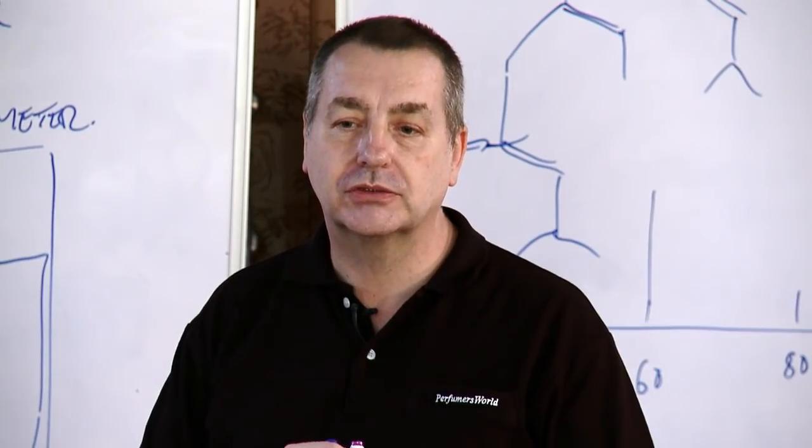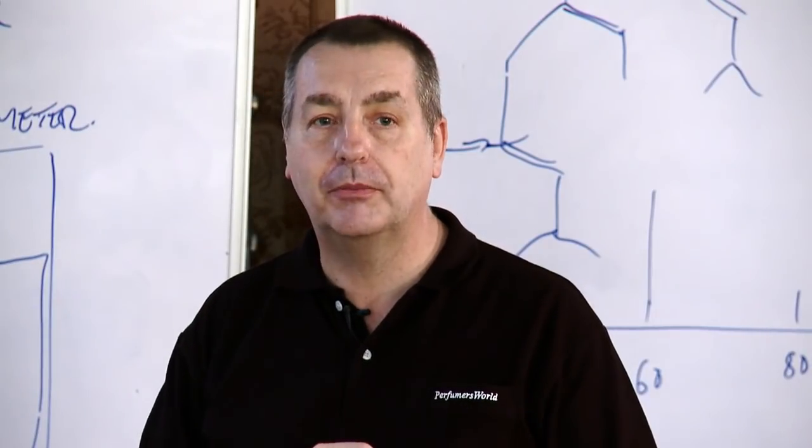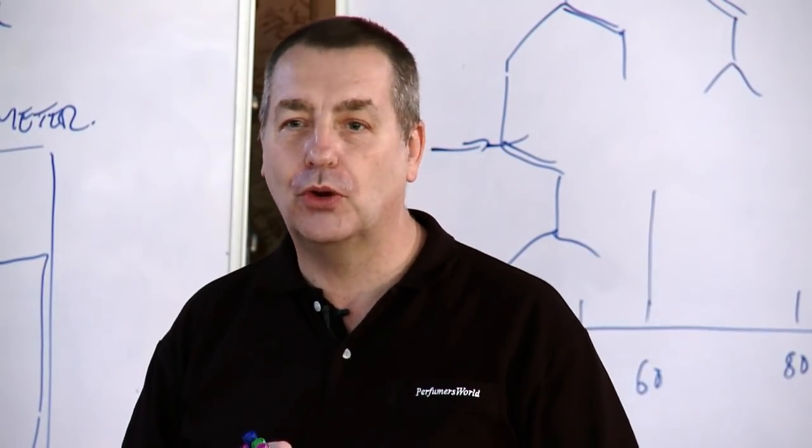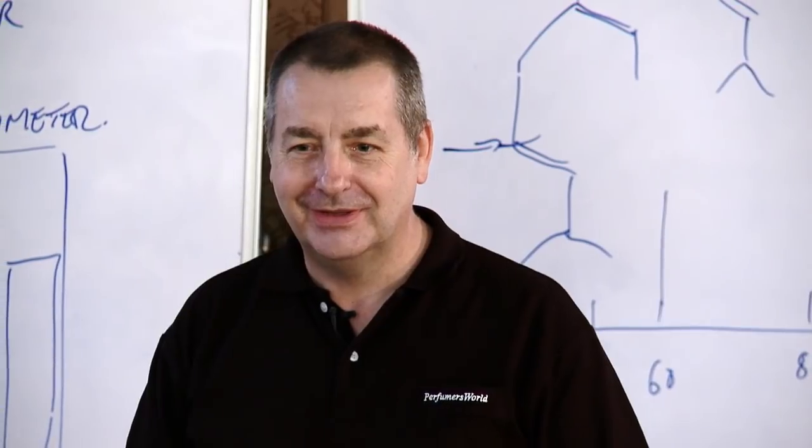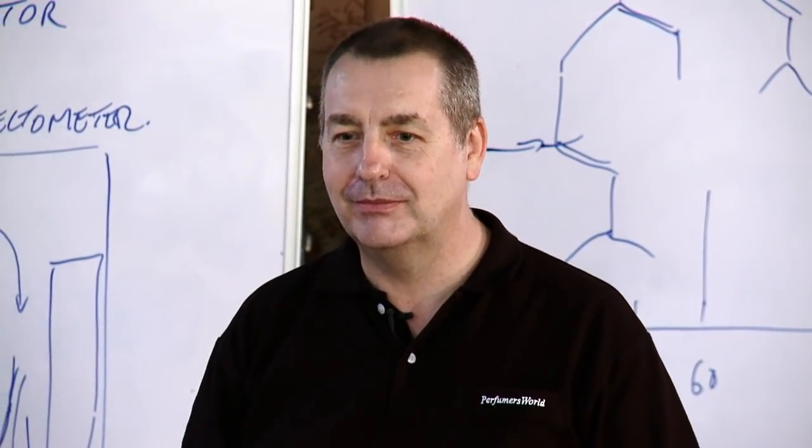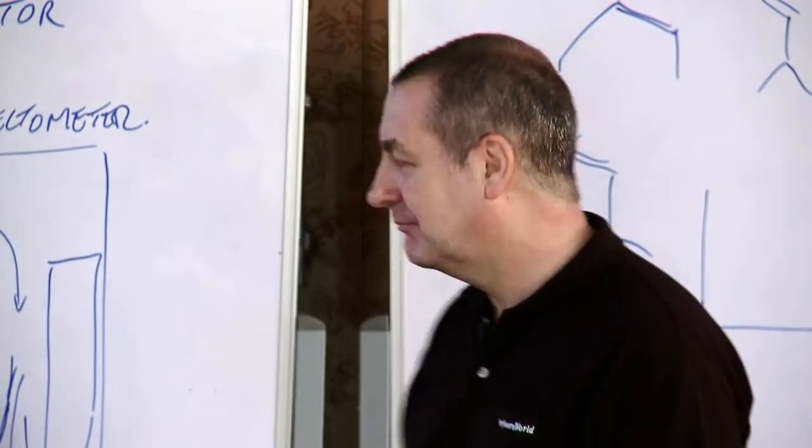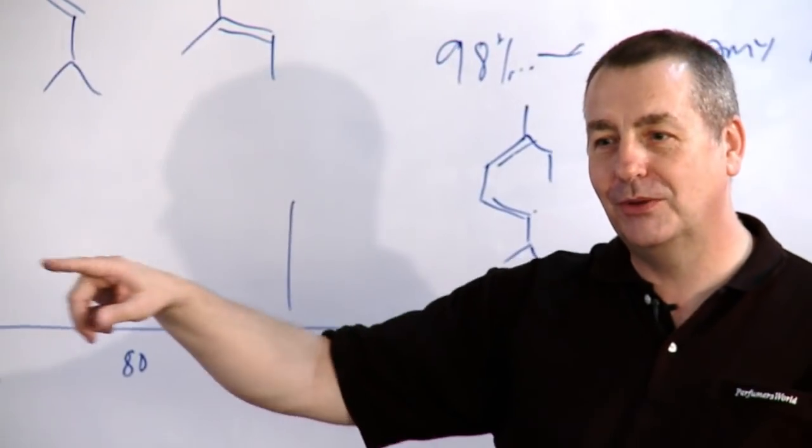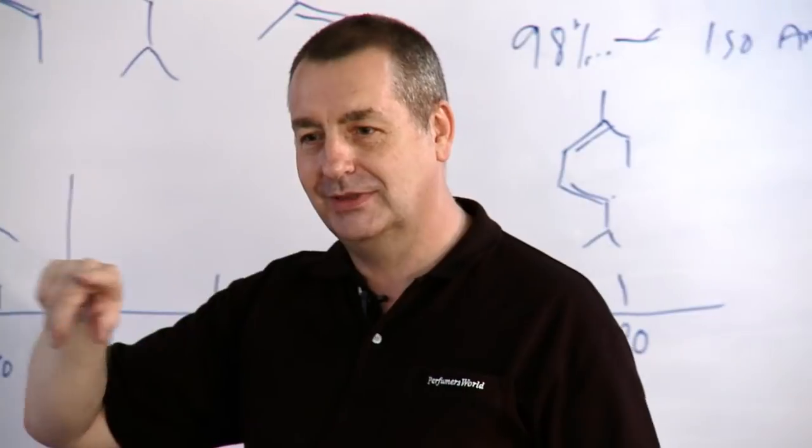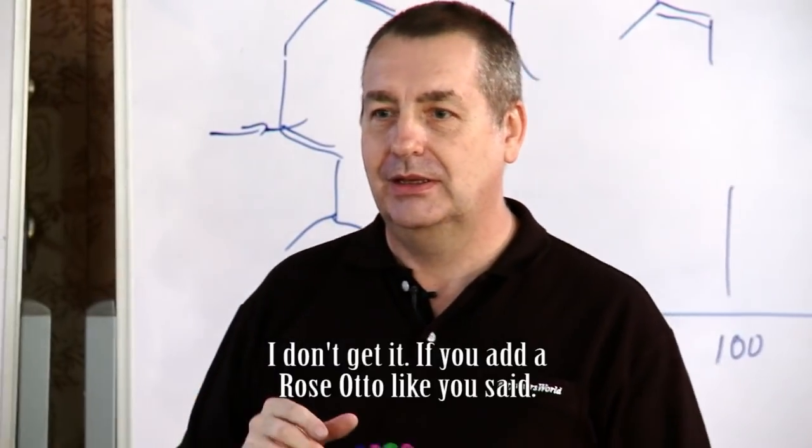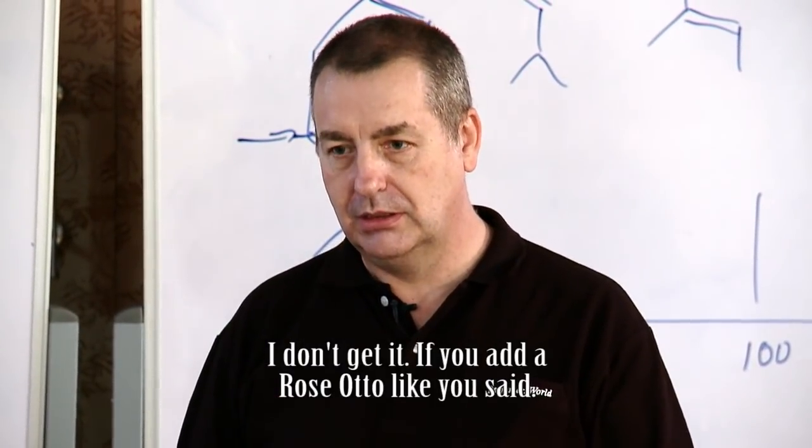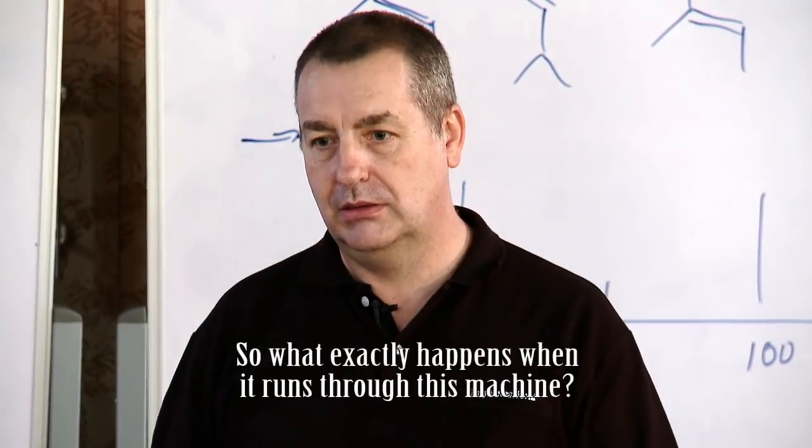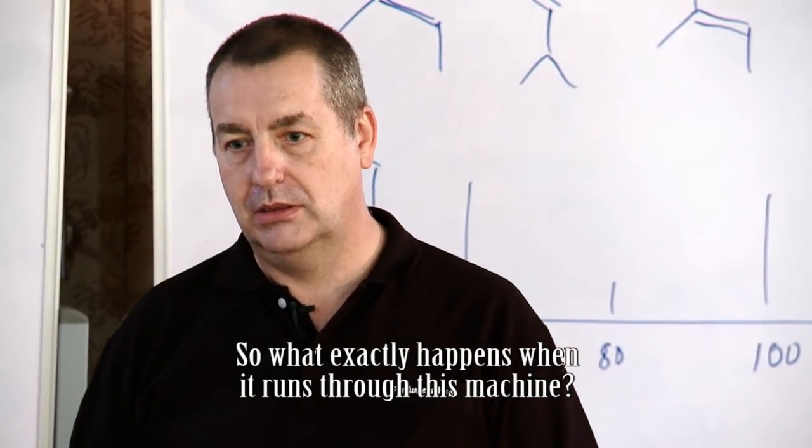If you'd used Rose Otto, which has maybe 300 components, at 0.001%, it adds something to the perfume, but in terms of the GC, it's just noise below the threshold. I don't get it. If you add a Rose Otto like this, what exactly happens when it runs through this machine?